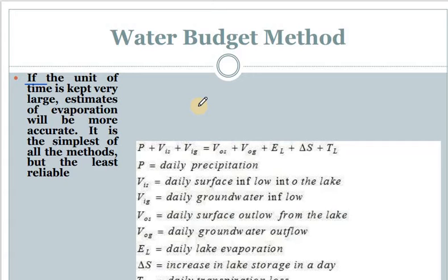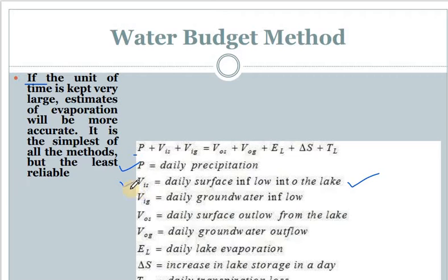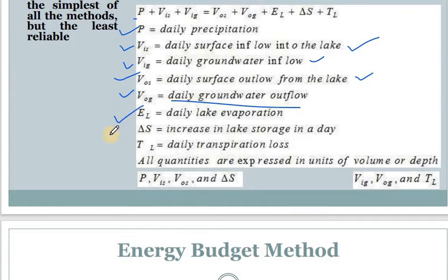For the water budget method, the equation is: P + V_is + V_ig = V_os + V_og + E_L + ΔS + T_L. Here P represents daily precipitation over the lake, V_is is the daily surface inflow into the lake, V_ig is the daily groundwater inflow, V_os is the daily surface outflow from the lake, V_og is the daily groundwater outflow, E_L is the daily lake evaporation, ΔS is the increase in lake storage in a day, and T_L is the daily transpiration loss. All quantities are expressed in units of volume or depth.